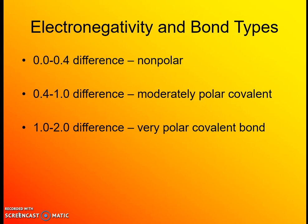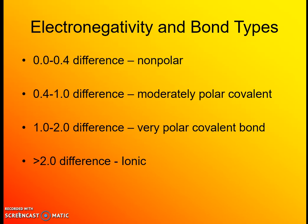If there's a large difference, that's a very polar covalent bond. We see that with hydrogen and oxygen in a water molecule, which explains why water has unique properties. Because it has such a polar bond and is asymmetrical, it causes some interesting properties. And if you have a difference of two or more, you have an ionic bond — a metal to nonmetal — where the electronegativity difference is so large that electrons aren't even being shared; they're being transferred.